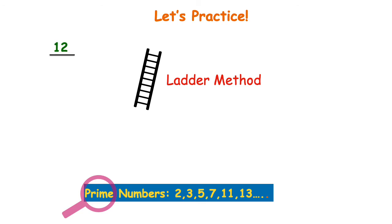Let's practice with the composite number 12 at the top of the ladder. First, I draw the letter L — L stands for ladder. On the outside, or to the left of the L, I put my prime factors. I start with the smallest prime number, 2, and ask: does 2 go into 12? Yes, so 2 goes on the outside. Then I think: what times 2 gives me 12? That would be 6. I continue down the ladder with another L, and ask: does 2 go into 6? Yes. What times 2 gives me 6? That's 2 times 3.